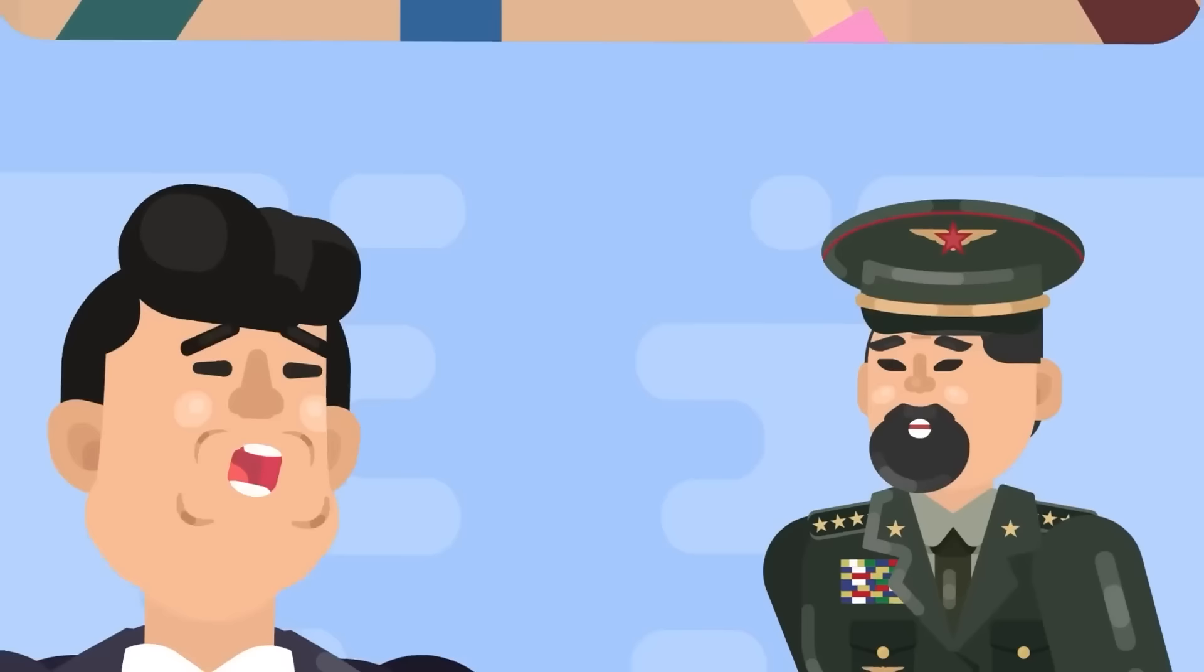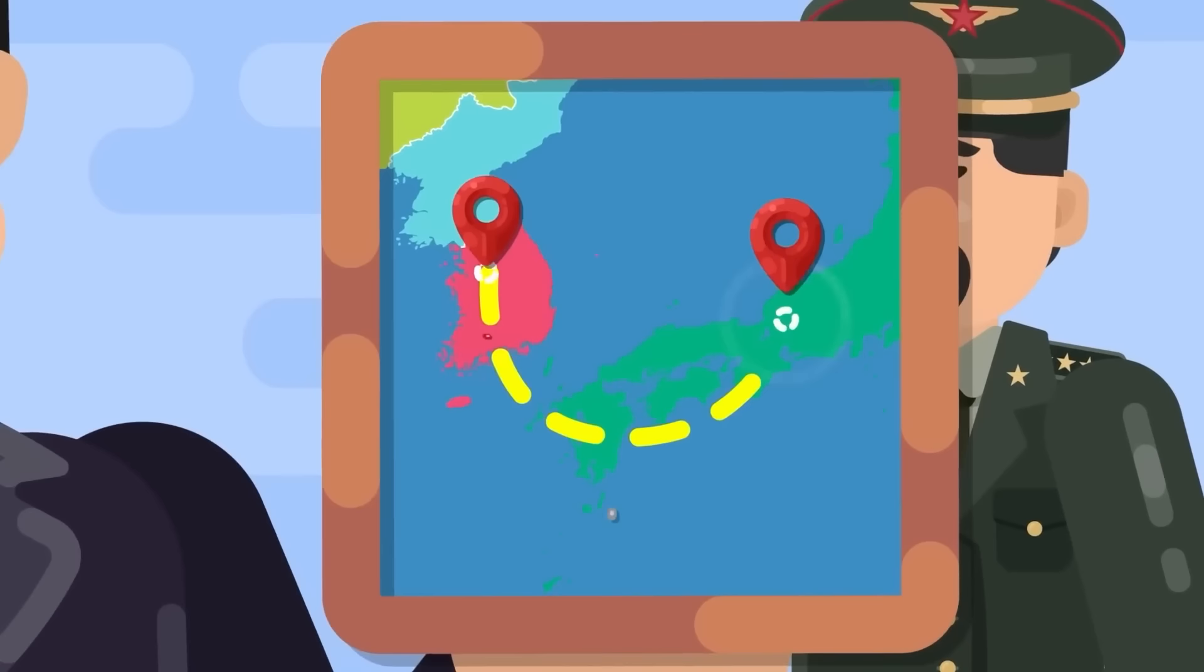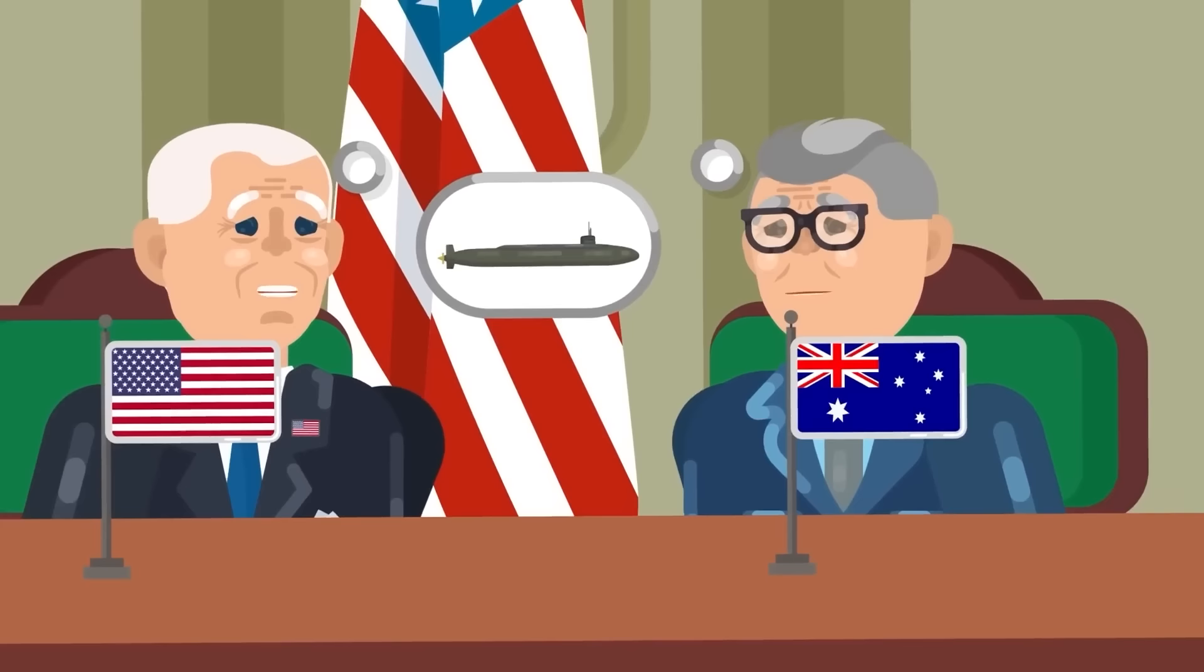This is one of China's main concerns. They already dislike the alliances the US has built in Asia, especially with South Korea and Japan, and they most certainly don't want to see that influence grow. Therefore, Australia becoming closer to the US and modernizing its navy, strengthening Western military capabilities in the region is a serious cause for concern.